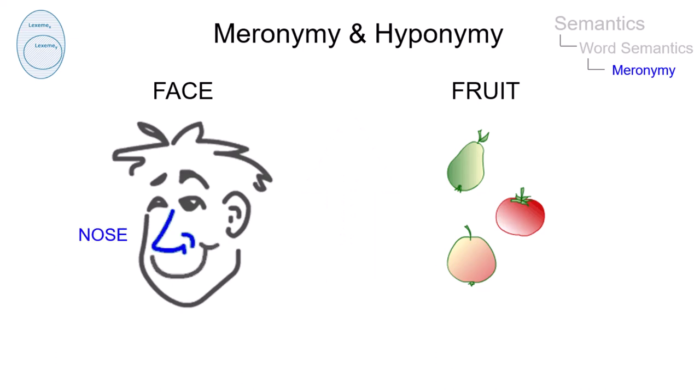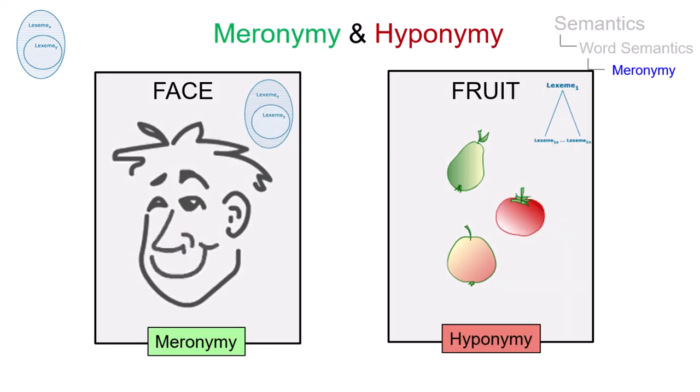A nose is not a kind, but a part of a face. And an apple is not a part, but a kind of fruit. Hence, meronymy is a part-whole relation and hyponymy one of inclusion.